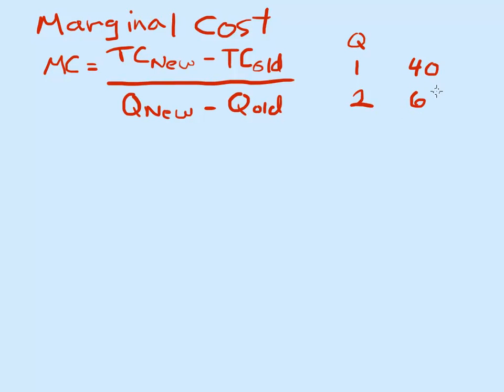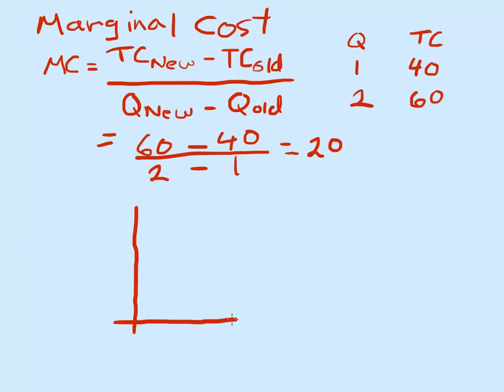units our total cost is $60. Again, this is total cost. So all we would do is say new is 60 minus 40 divided by 2 minus 1, which is just $20. How would we draw that? Obviously in a graph.